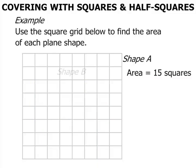The next one is shape B. An odd looking shape there. How many squares to cover this one?